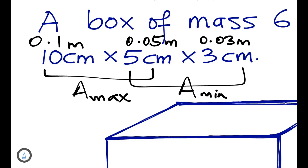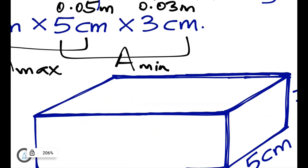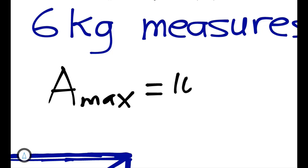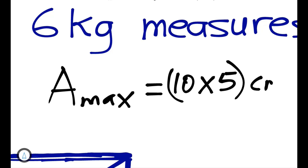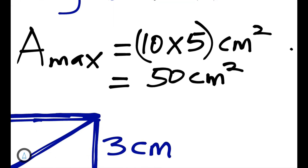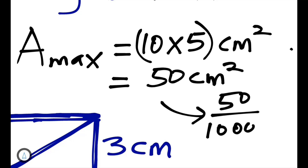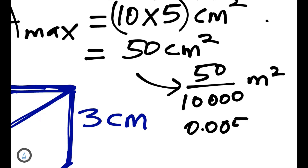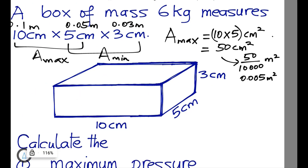Alternatively, you can first calculate the area in centimeters squared — for example, maximum area = 10 × 5 = 50 cm² — and then convert to meters squared by dividing by 10,000, giving 0.005 m². This matches the result of multiplying 0.1 × 0.05 directly.